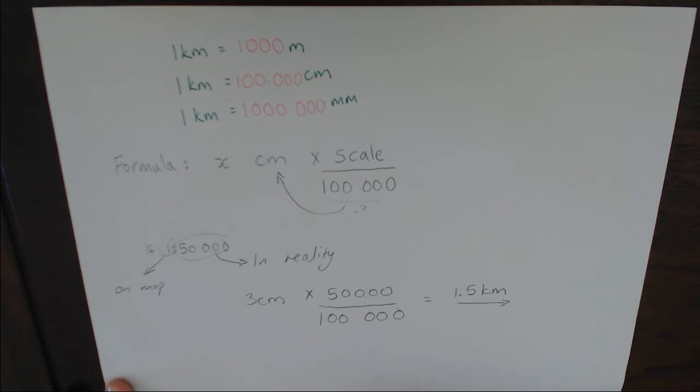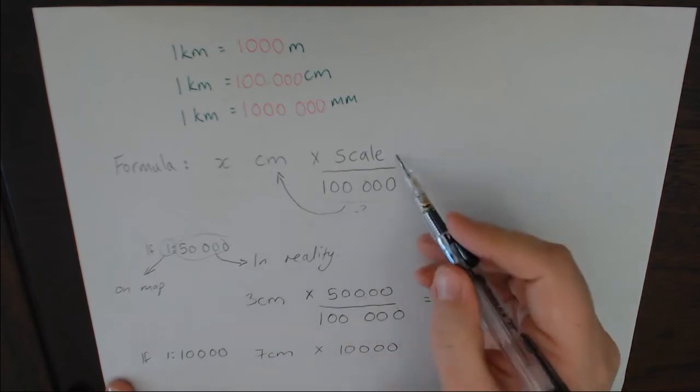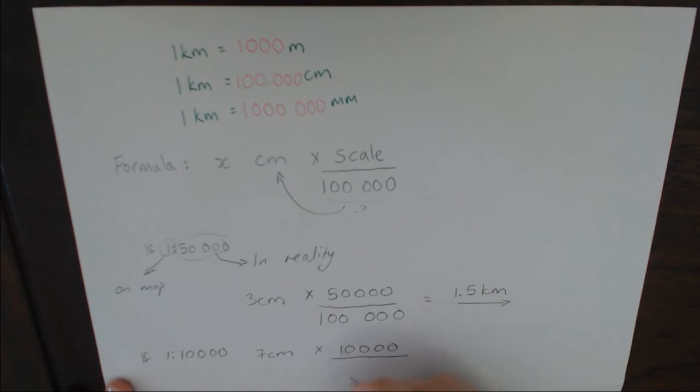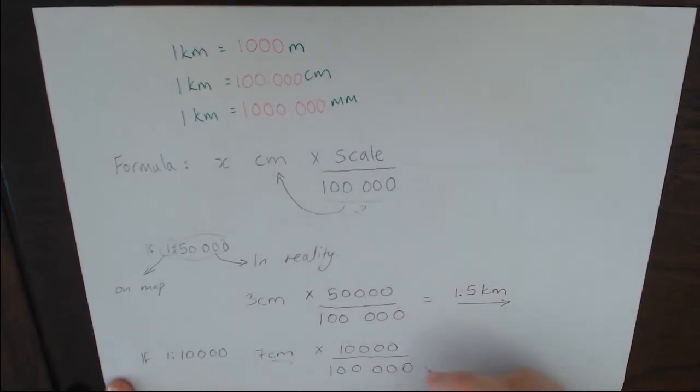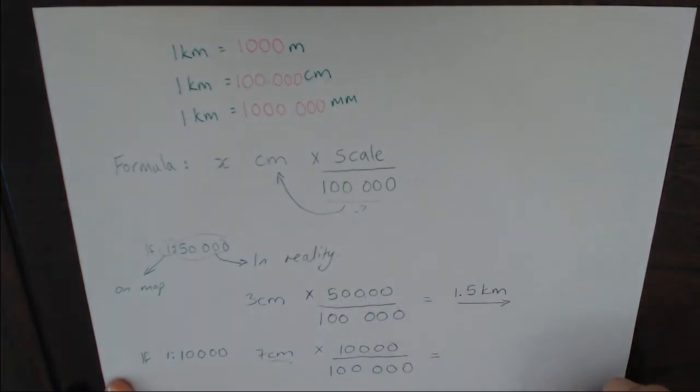With the 1 is to 50,000 map, there is the shortcut of just halving the number. But I like us to know the formula because sometimes our scale changes. So 1 is to 10,000 is most common with our orthophoto maps. And so I'm going to do an example here of 7 centimeters multiplied by 10,000 because that is the scale. And then I'm going to also divide that by 100,000 because I have still measured in centimeters on the map. So I need to divide it by a hundred thousand and that will give us 0.7 kilometers. You can also write that as 700 meters depending on the question.